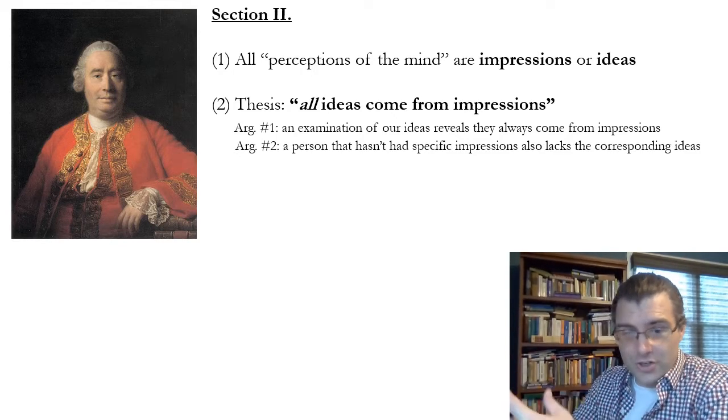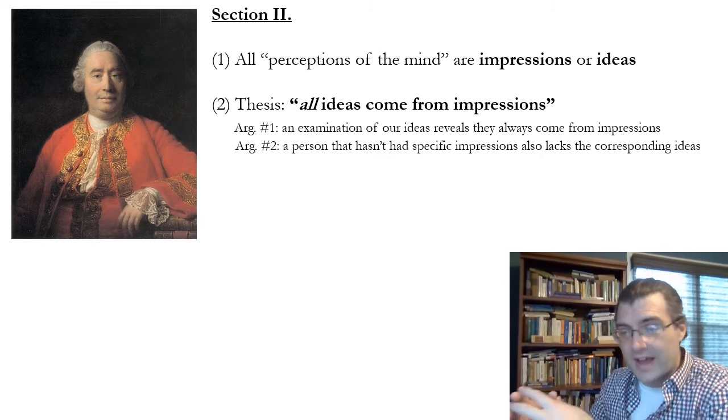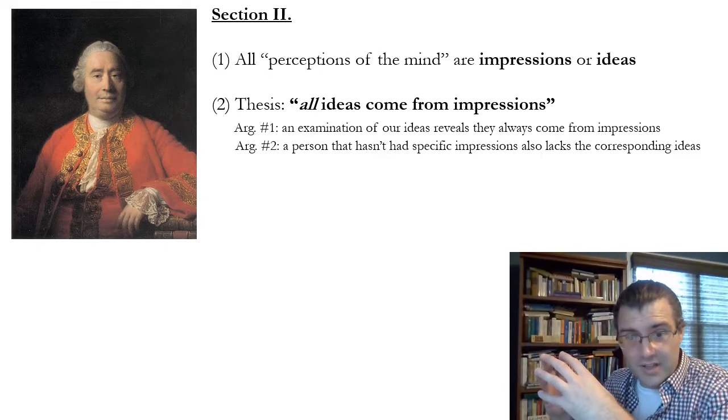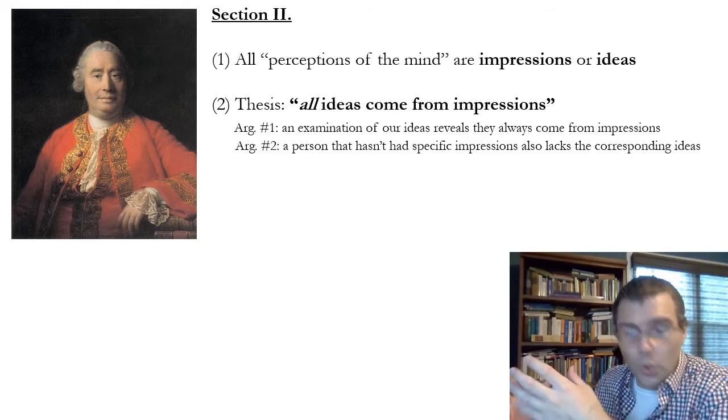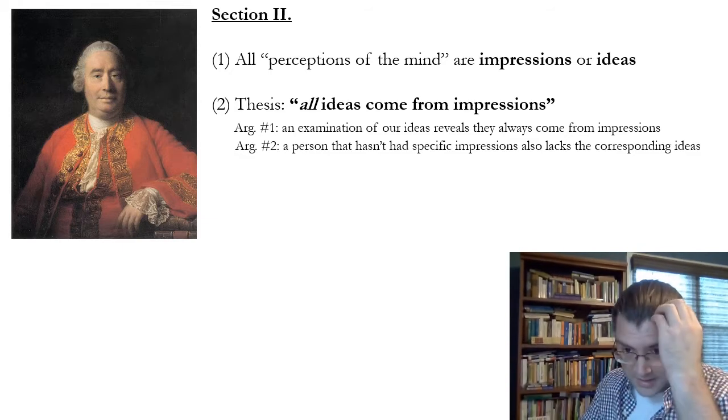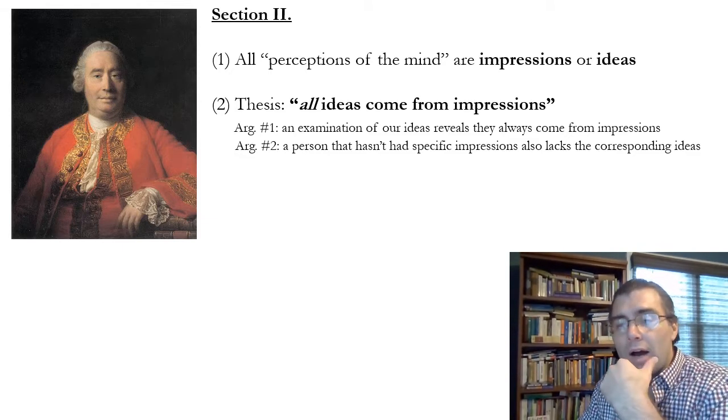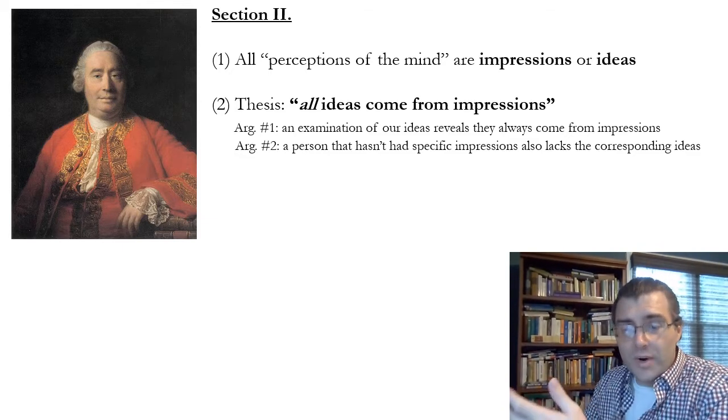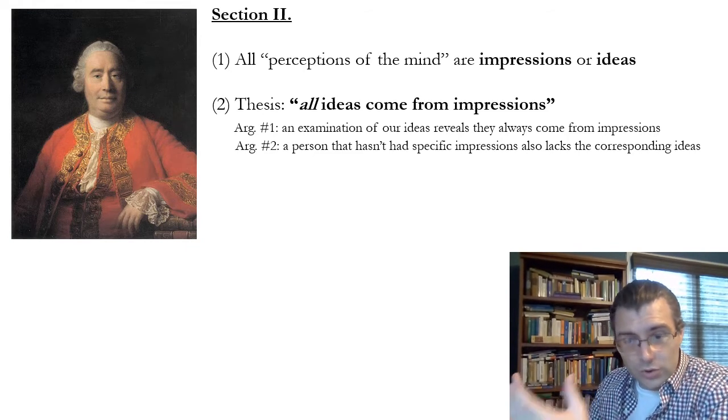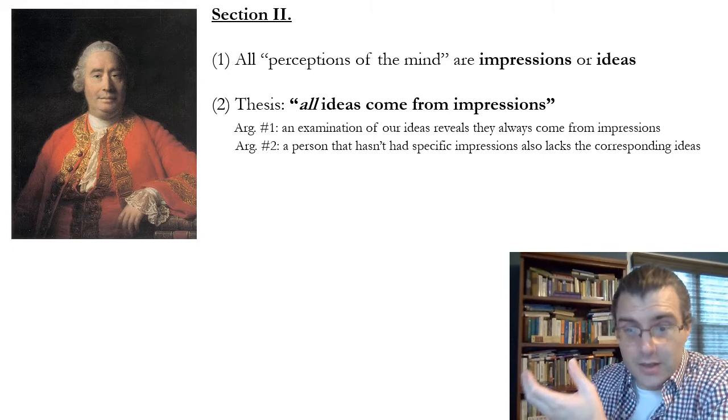So we've had impressions in the past, experiences in the past, that we're able to combine in our minds to make the idea of something like a gold mountain or of a unicorn, which is a combination of a horse and the kind of horn that we could see on other things. And so this is where all ideas come from, according to Hume. All ideas have their origins, ultimately, in impressions.